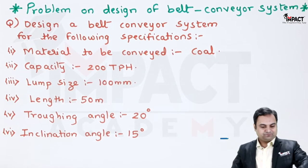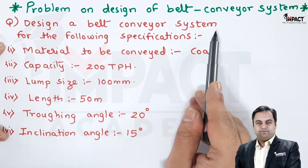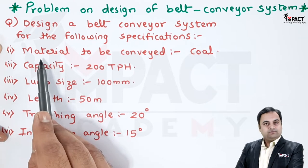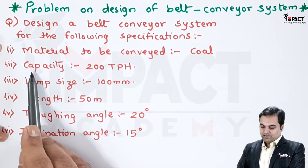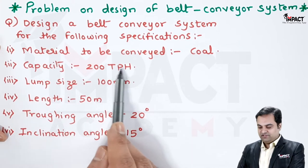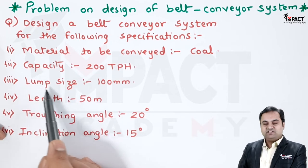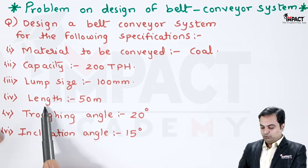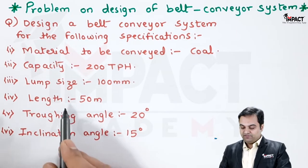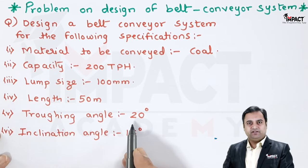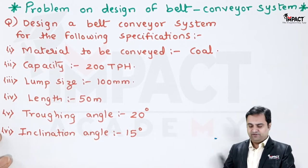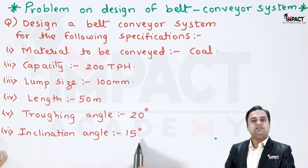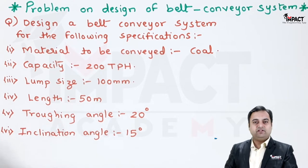In this video, I will be explaining the design of a belt conveyor system. The problem specifies: material to be conveyed is coal, capacity is 200 tons per hour (tph), lump size of coal is 100 mm, length of conveying is 50 meters, troughing angle is 20 degrees, and inclination angle of the belt is 15 degrees. For this data, we have to design the belt conveyor system.